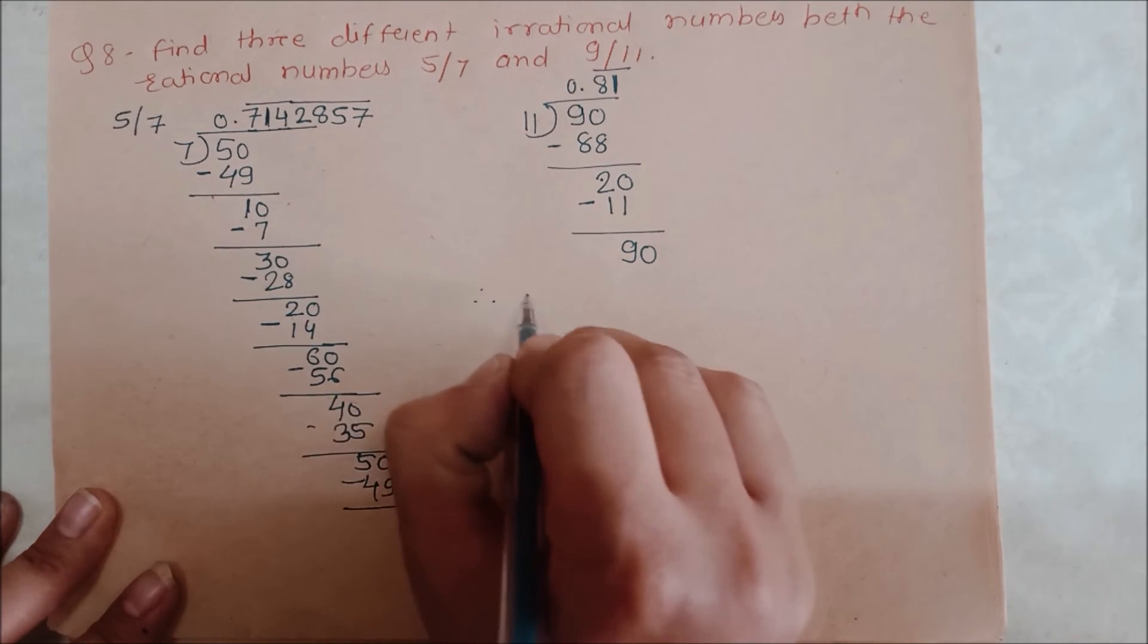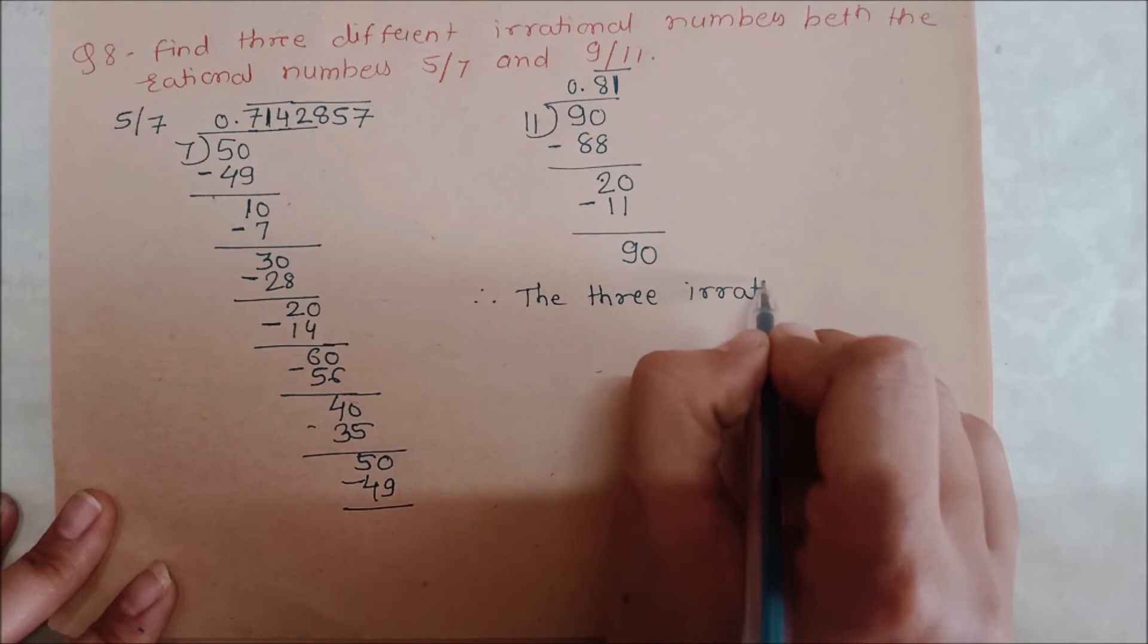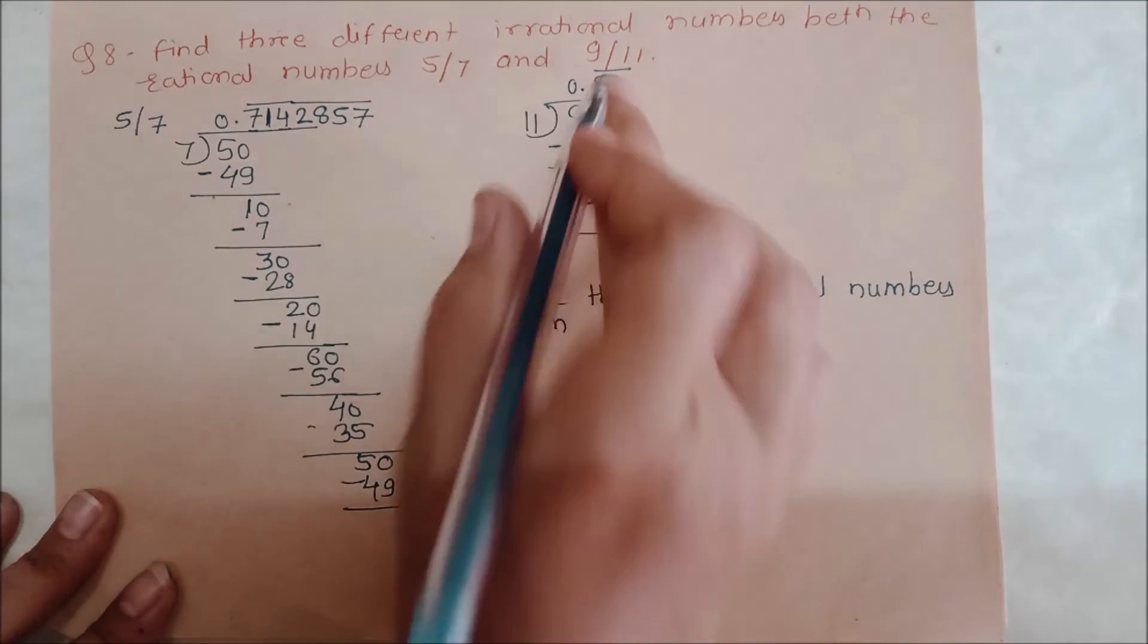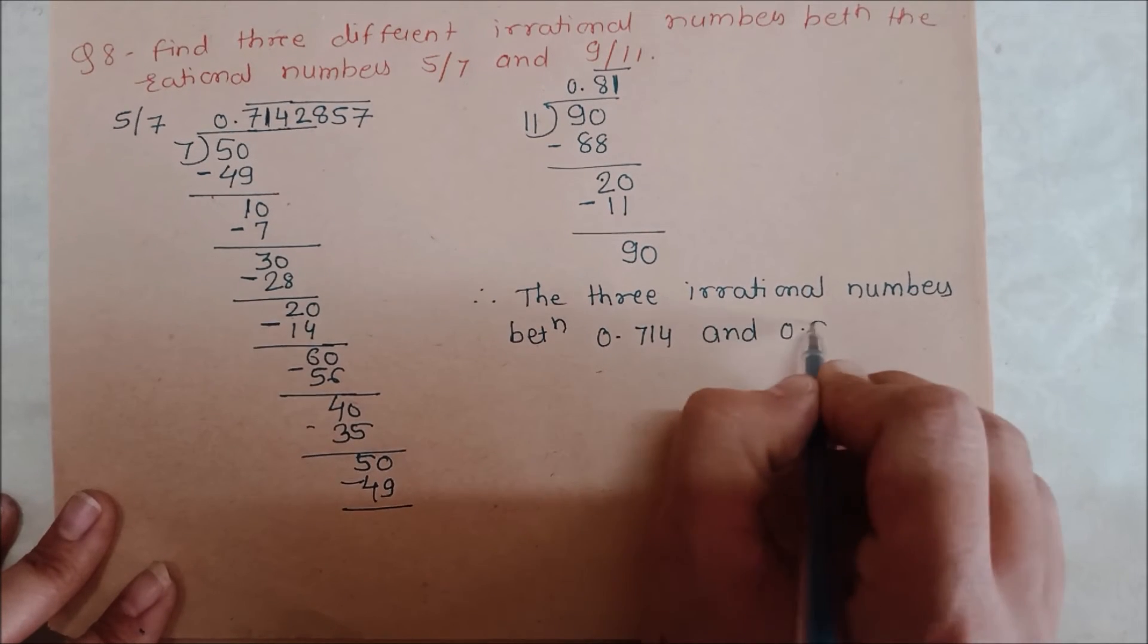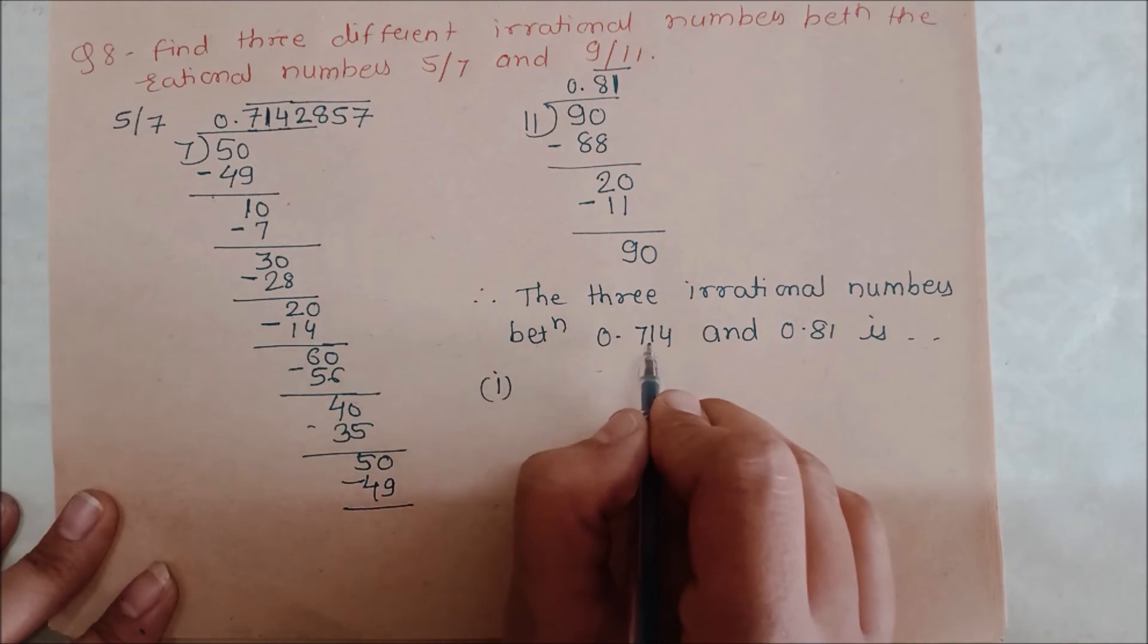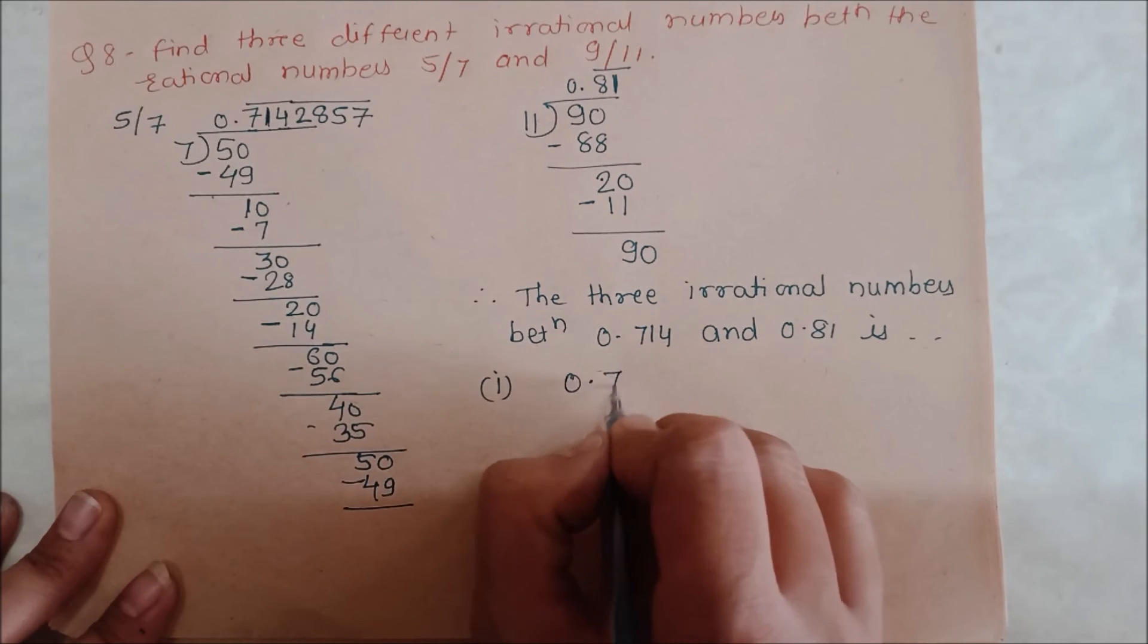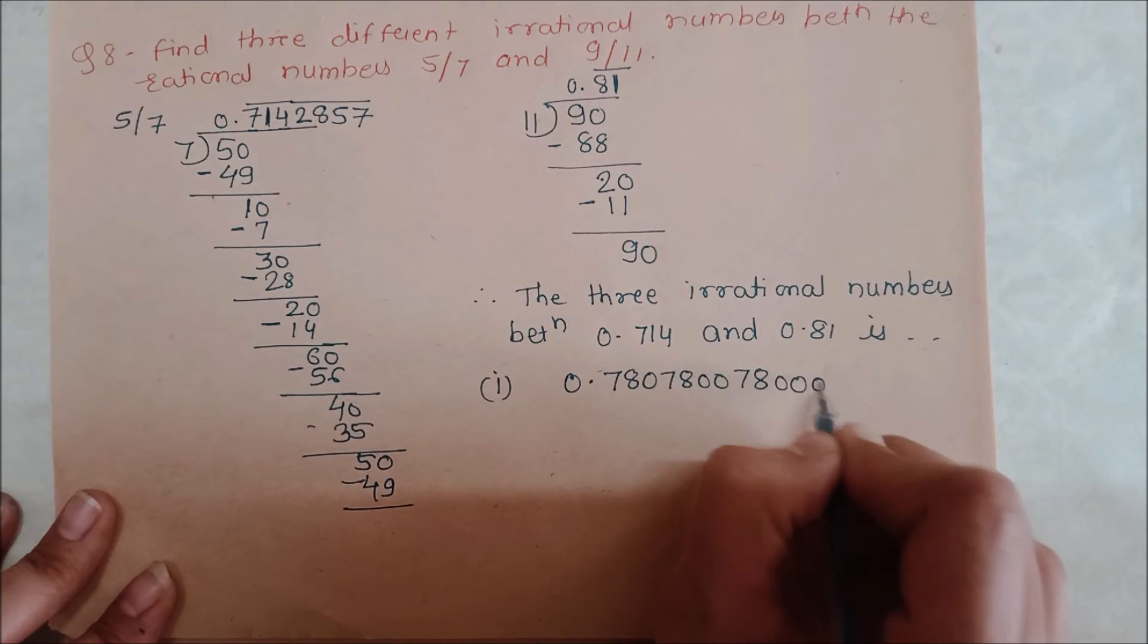So now, what do we do? Therefore, the three irrational numbers between 0.714 and 0.81 is: We have to give three numbers. First 0.780780780 dot dot dot, second 0.808008000, this way we can continue.